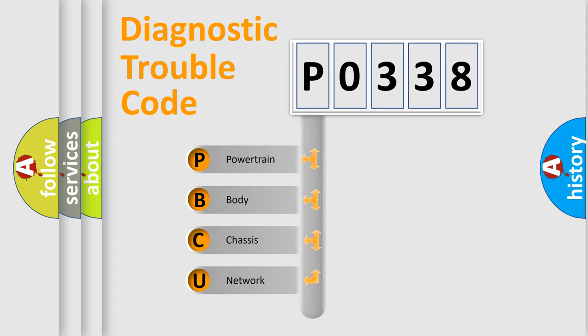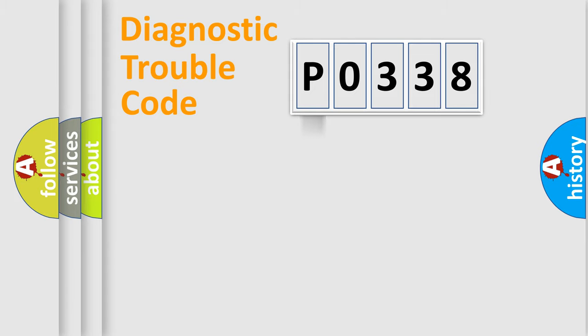We divide the electric system of automobile into four basic units: powertrain, body, chassis, and network. This distribution is defined in the first character code.